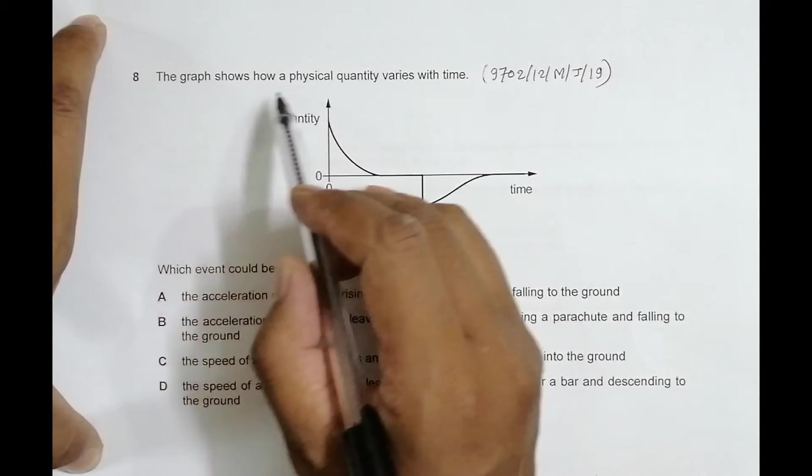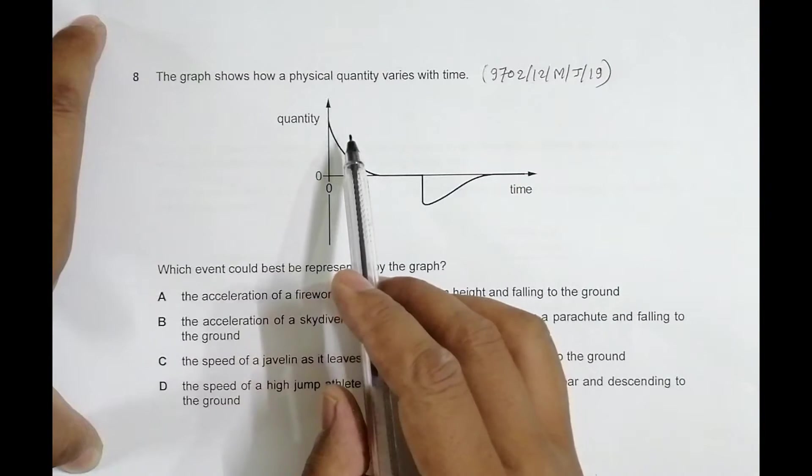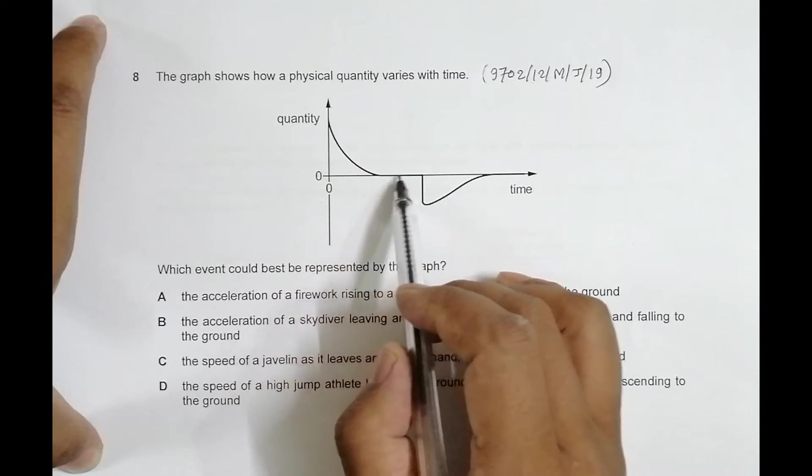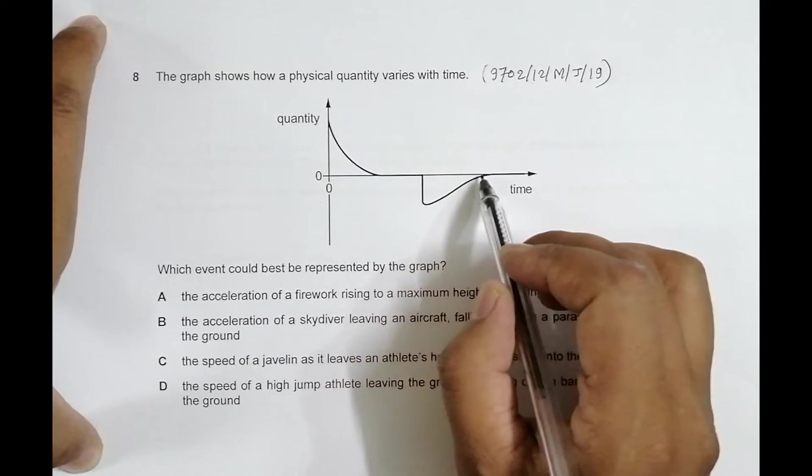The graph shows how a physical quantity varies with time. First of all, the quantity is positive, the value goes on decreasing to become zero, then turns negative, and then the negative value decreases, or we can say the overall value increases to become zero once again.